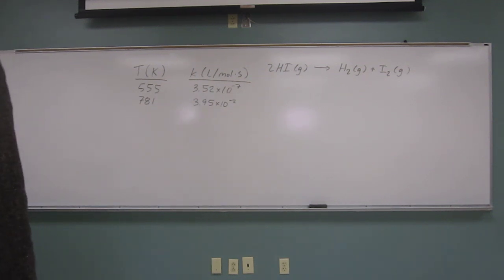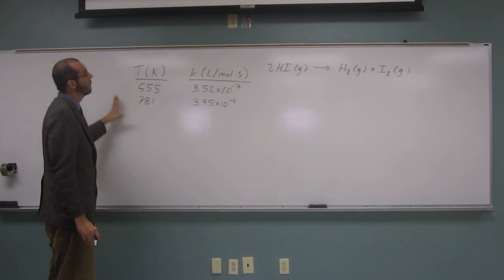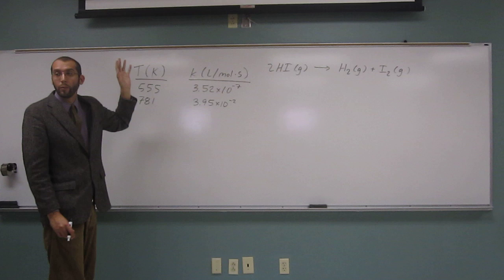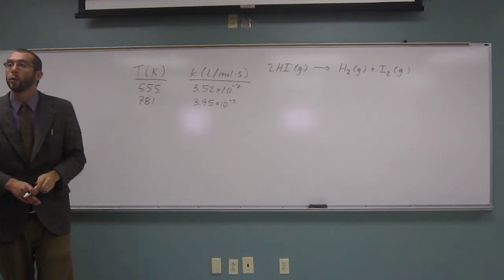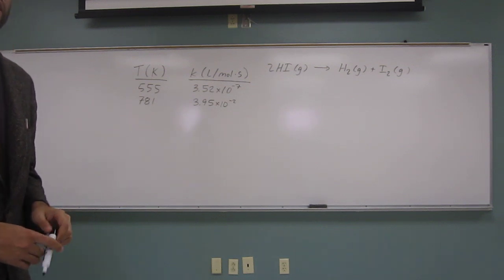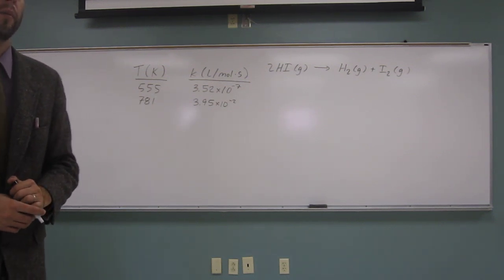So they were nice enough to give us the data in table form and also to give us the temperature in Kelvin. That really helps because when you're doing these Arrhenius equations, you're going to have to convert your temperatures to Kelvin if they're given to you in Celsius or God forbid, Fahrenheit.